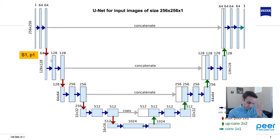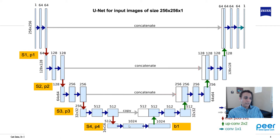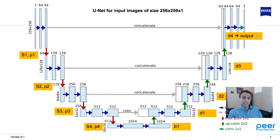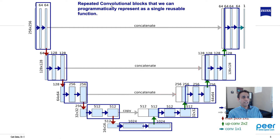Continuing: s1, p1, s2, p2, s3, p3 — after each step you get the convolution output and max pooling output, then you have the bottleneck. Going up, we have decoder blocks d1, d2, d3, d4. We don't need two outputs going up because we only need the output from each decoder block as input to the next. Now let's identify the repeating patterns. The blue boxes — two convolutional arrows — repeat throughout, so why not define that as a function?